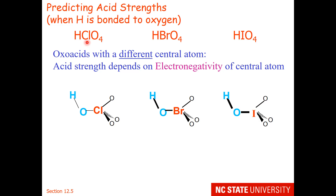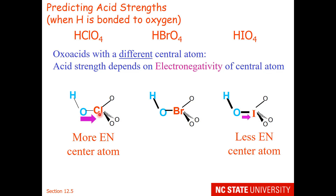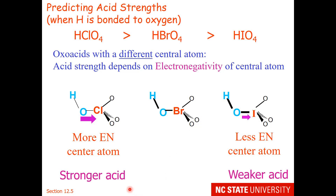One more secondary effect — what if we have the same number of oxygens but a differing central atom? We are looking down the group from chlorine to bromine to iodine. In this series, acid strength depends on the electronegativity of the central atom. Chlorine is more electronegative and more electron withdrawing, so notice how the oxygen-hydrogen bond is drawn weaker. Iodine is less electronegative, so it is willing to share more electrons — the oxygen-hydrogen bond is a little bit stronger. Our stronger acid has the more electronegative central atom.